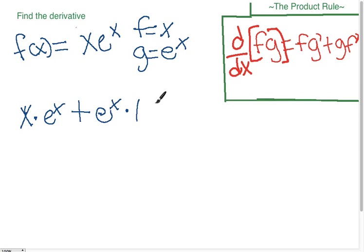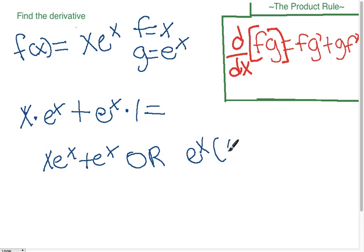So the final answer is x e to the x plus e to the x. Or if you want to simplify it in simpler terms, you would factor out e to the x and you'd be left with x plus 1.